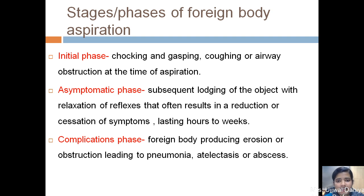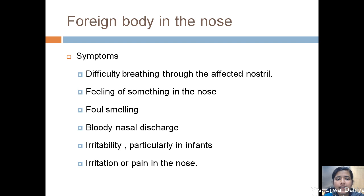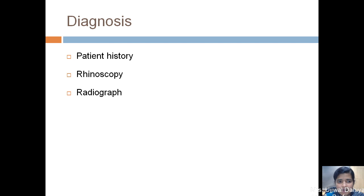For a foreign body in the nose, commonly exhibiting symptoms are difficulty in breathing through the affected nostril, feeling of something in the nose, foul smelling bloody nasal discharge, irritability particularly in infants, and irritation or pain in the nose. Diagnosis is by patient history, rhinoscopy examination, and radiograph. The method of removal is under general or local anesthesia, where we visualize and remove the foreign body. Choking is defined as interruption of respiration by an internal obstruction of the airway, usually by a food item or small object.